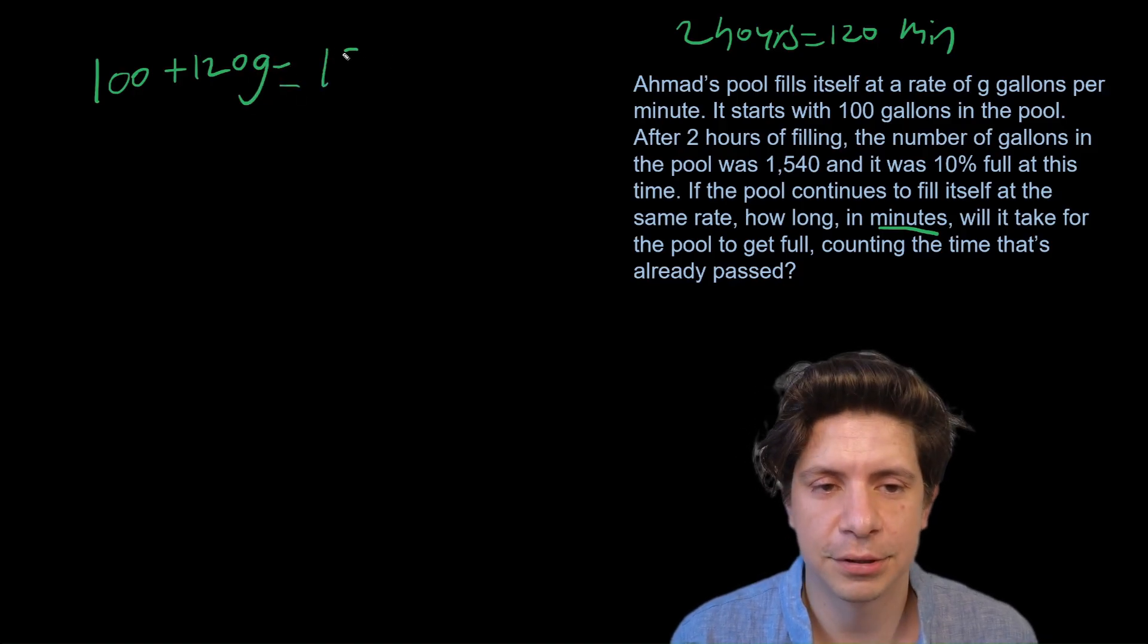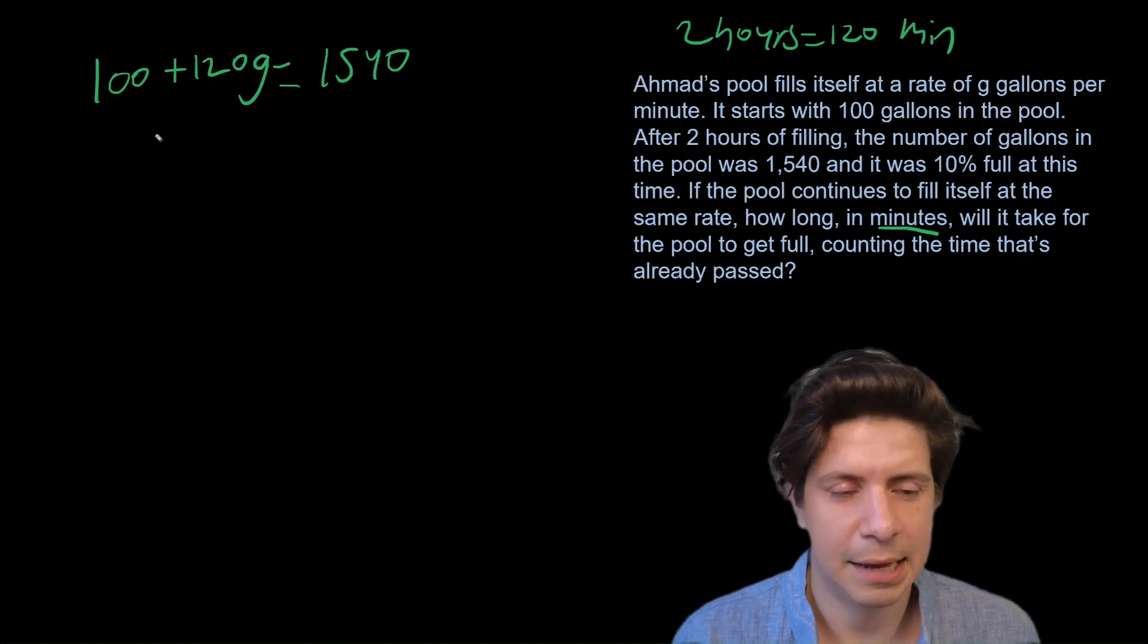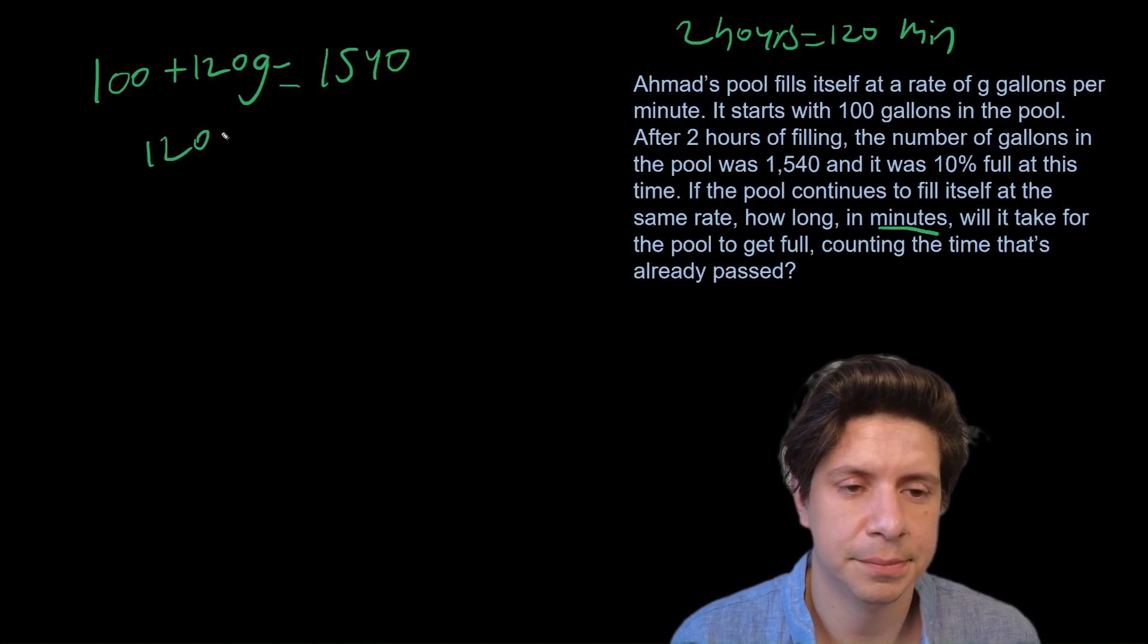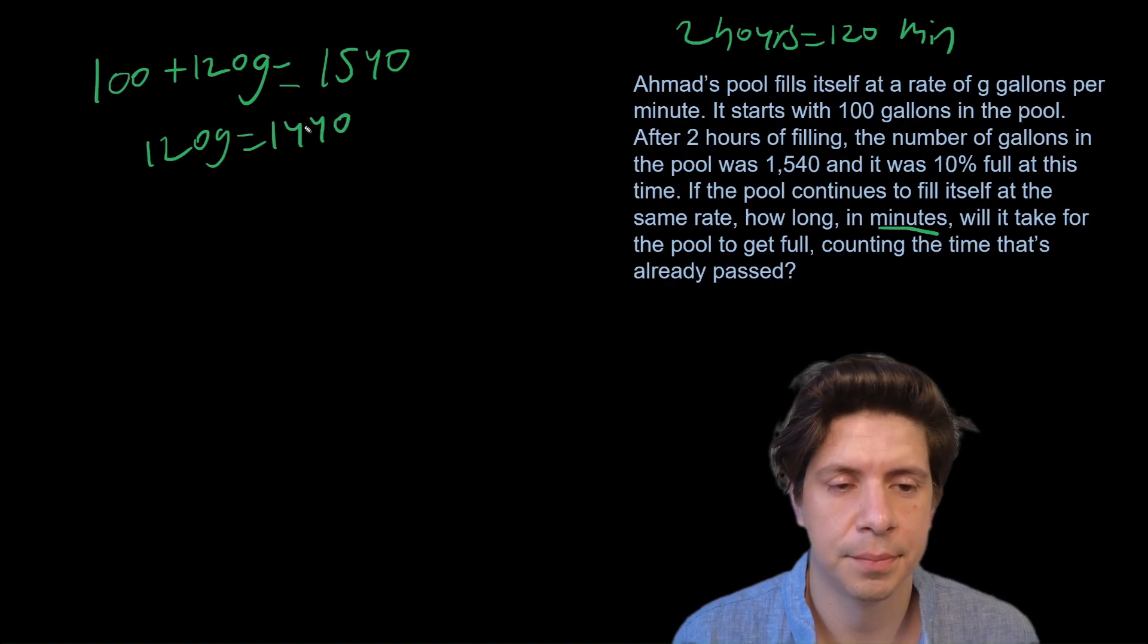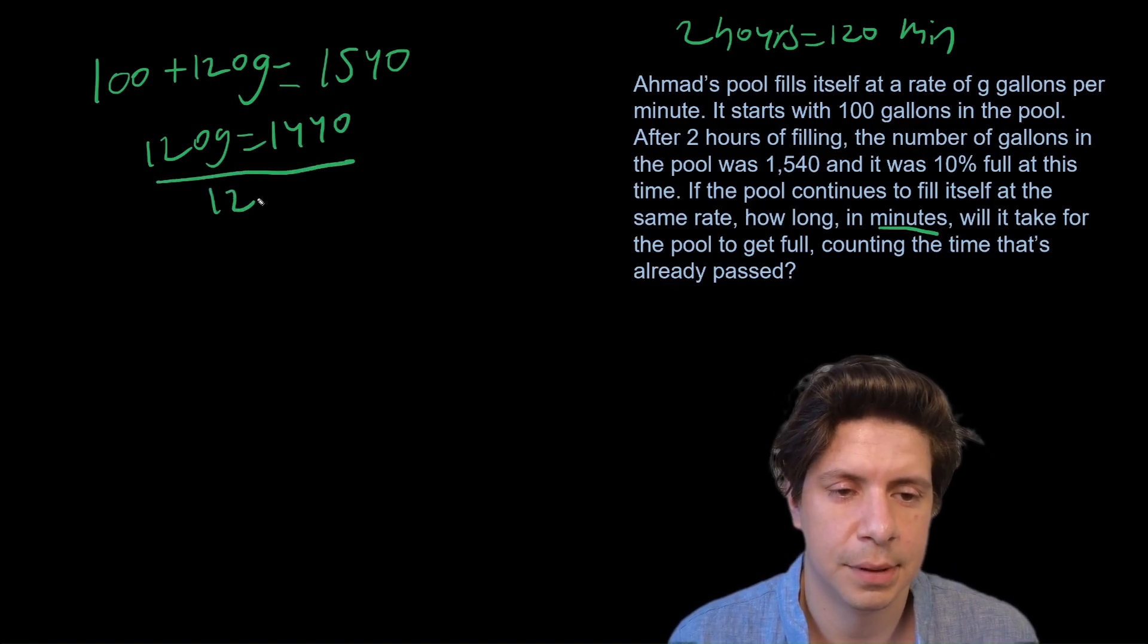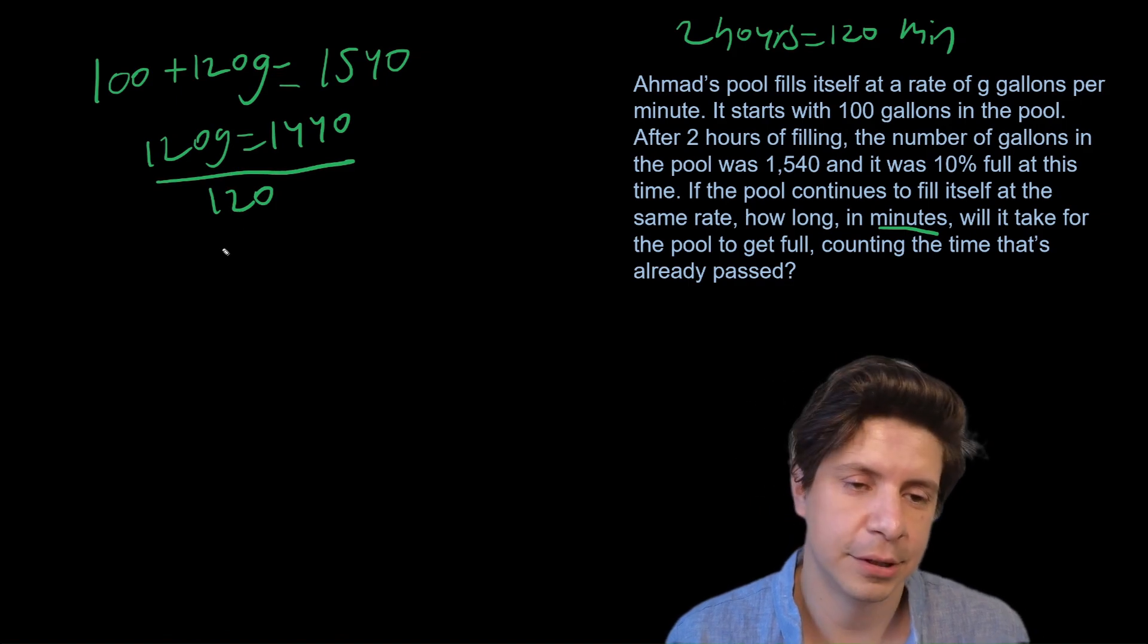Plus 120, we don't need to use g but let's use g because that's what they give us. Equals 1540. So let's find g. And that will be 120g equals 1440. Now divide by 120, and it's basically like 144 divided by 12, so g equals 12.